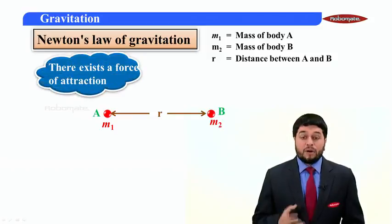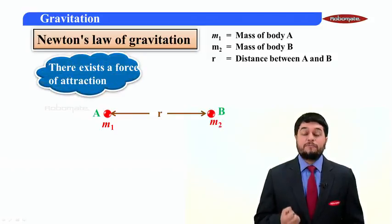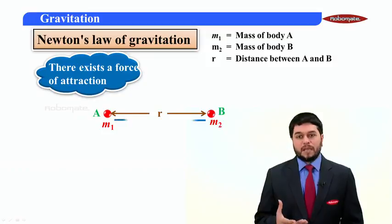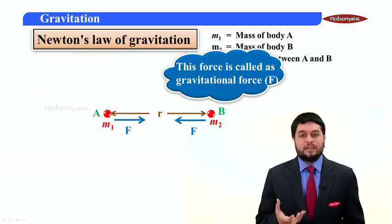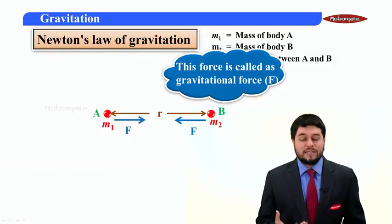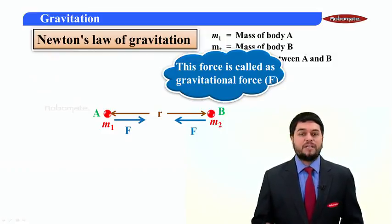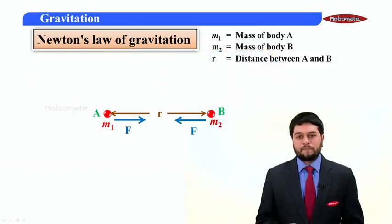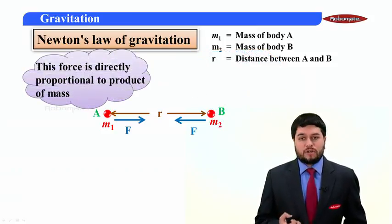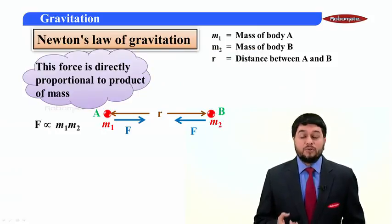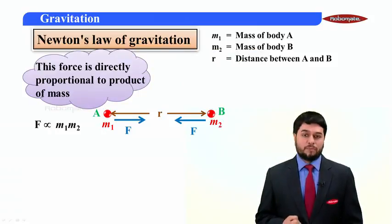Then, according to Newton, there exists a force of attraction between these two masses. And this force of attraction between the two material bodies is called as the gravitational force. Now, according to Newton, this gravitational force of attraction is directly proportional to the product of the masses M1, M2.